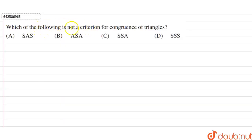of the following is not a criteria for congruence of triangles? SAS, ASA, SSA, or SSS?